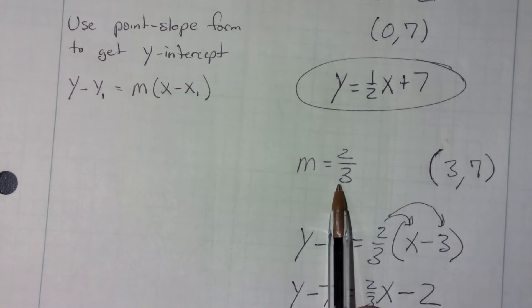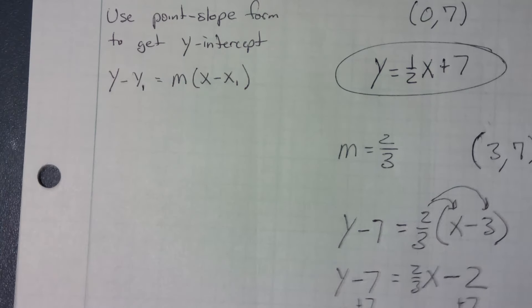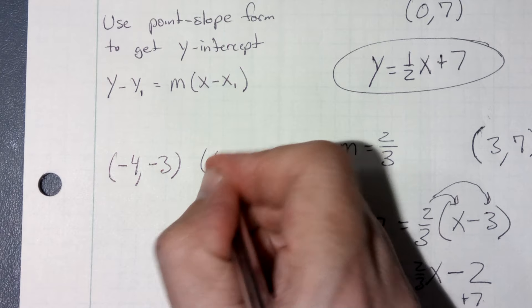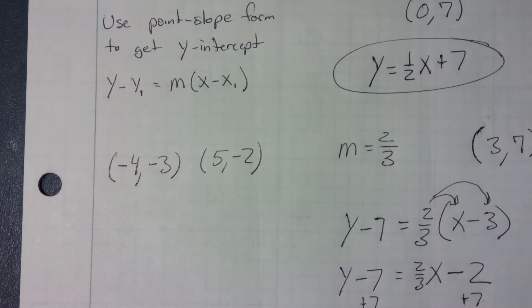Now, that's if they gave you the slope and a point that isn't the y-intercept. Let's do one more. I wonder if they just give you two random points. Maybe they give you, and I'm going to give some negatives in this one, negative 4, negative 3, and the point 5, negative 2. Totally made up those numbers, so I have no clue what the slope will be or what the y-intercept will be.